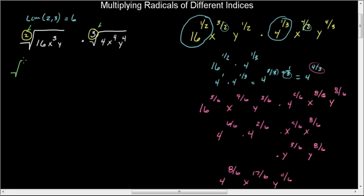So since I multiply the radical by 3 here, 2 times 3, I'm also going to multiply each power in here by 3. So that means 16 to the third. This is x to the 9, y to the 3.